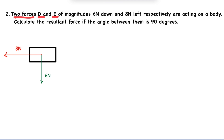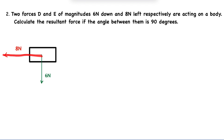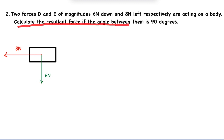A second example: we have two forces D and E of magnitude 8 Newtons and 6 Newtons respectively acting on a body. Force D acts to the left at 8 Newtons, and force E acts downwards at 6 Newtons. The question is: calculate the resultant if the angle between them is 90°.